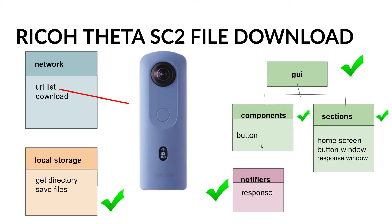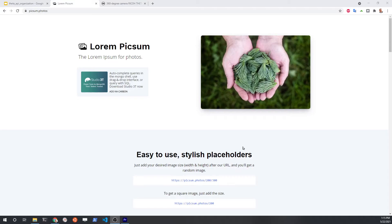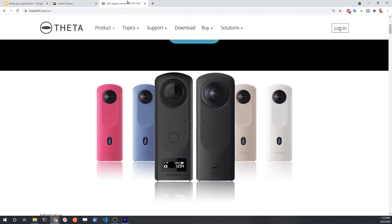In the previous tutorials we completed the entire application including the GUI components, the notifiers, local storage, and the network. We used a list of images from FreeSight lorem pixel. Today we're going to focus on the Ricoh Theta.